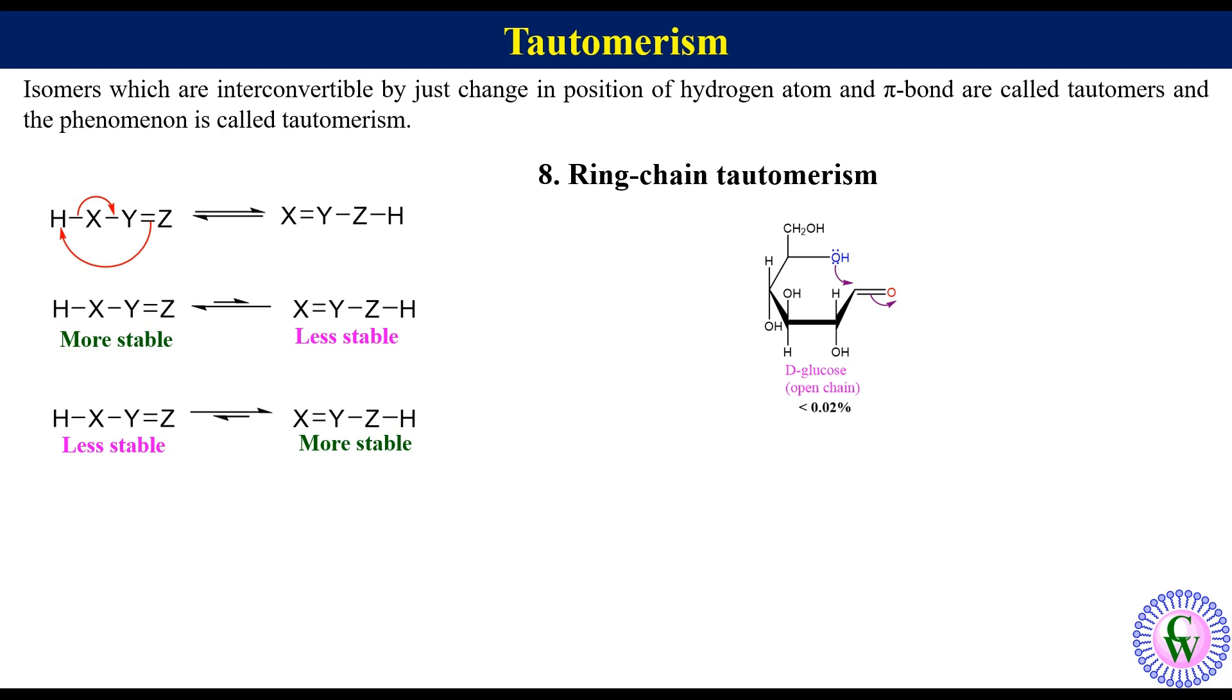It undergoes cyclization and proton shift like this to produce 36% alpha-D-glucopyranose and 64% beta-D-glucopyranose. These interconversions between open chain form and alpha-D-glucopyranose and open chain form and beta-D-glucopyranose are the example of ring-chain tautomerism.